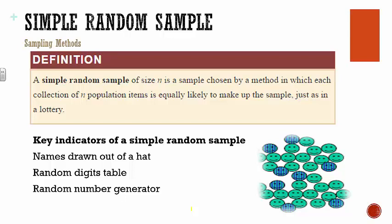Lastly, we have a random number generator, which is very convenient because it uses technology — you can do this on your phone, calculator, or Excel. Just like with the random digits table, you give everyone a number and have the random number generator produce however many numbers you need. If I wanted to pick ten people from this class, I'd have it spit out ten numbers, and whatever ten numbers it produces, those are the ones I use for my sample.